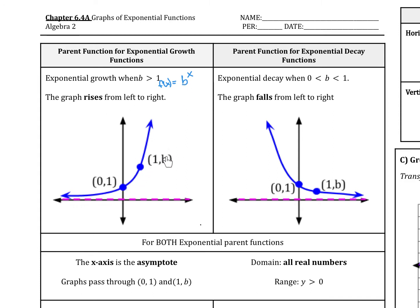the graph will rise from left to right. And if you notice the b value here, that is our first point, 1 comma b. And then the most important point here is 0 comma 1, because anything raised to the 0 power is 1.